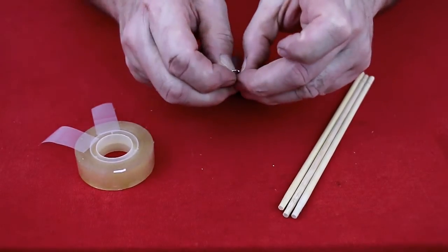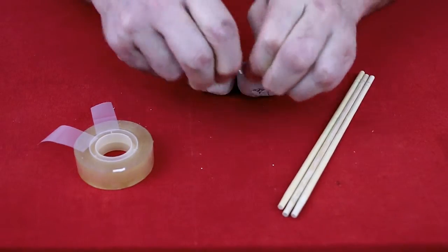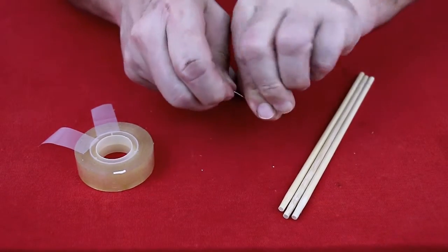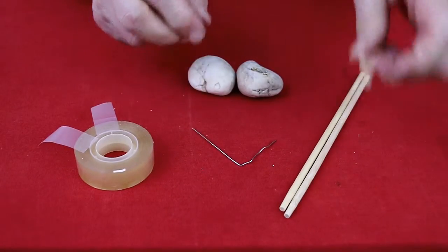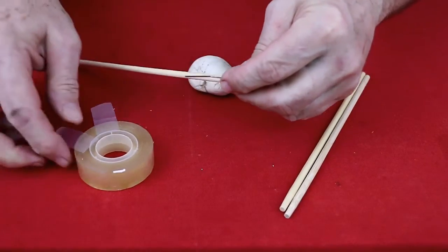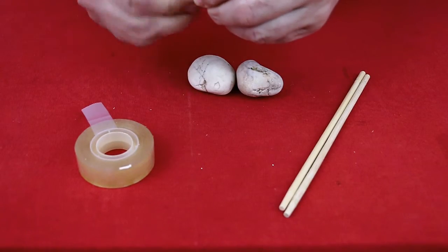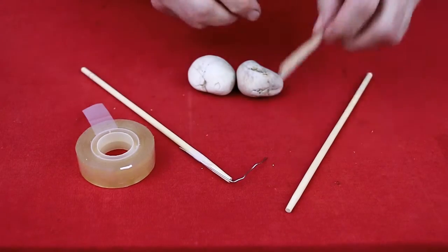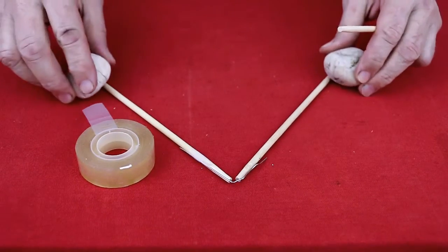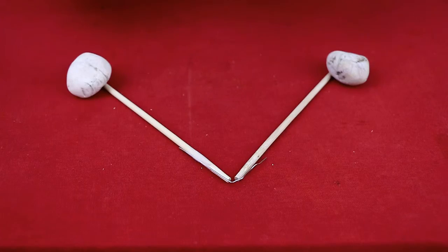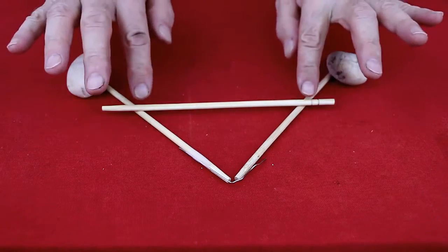Bend a paper clip into a 90-degree angle and tape chopsticks onto each side. Add stones to the end of the chopsticks and add one more chopstick across in an A shape, fixing it with tape.